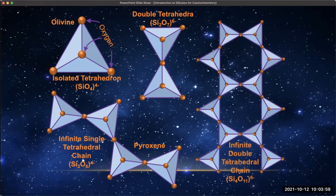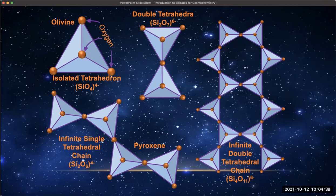Then you can also have a double chain, where you've got two of those chains stuck to each other. You can imagine continuing this by adding on another double chain to the side, and so on, until you end up with a full sheet, where each tetrahedron is sharing three of its oxygens and the one at the apex is not shared. And then you can have all four oxygen atoms shared, so that each tetrahedron is directly next to the next one with no unshared oxygens.